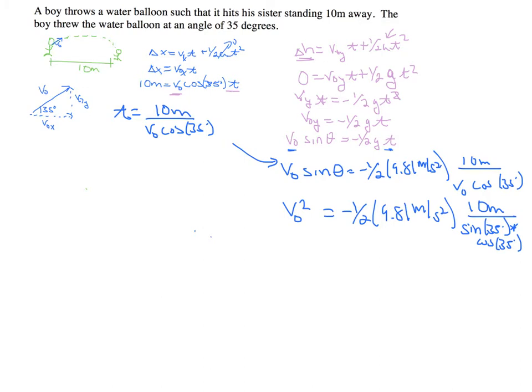If I plug all that into my calculator—and I realize I forgot to put in the fact that the acceleration is in the opposite direction of my initial velocity—I find that V0 is equal to about 10.3 meters per second.